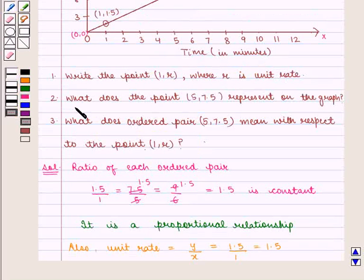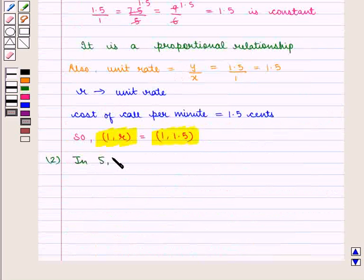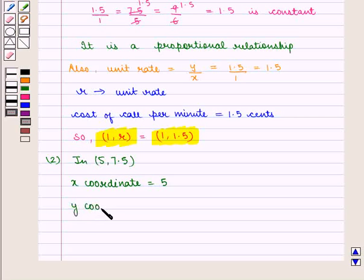Next, we shall find out what does the point (5, 7.5) represent on the graph. In the ordered pair (5, 7.5), the x-coordinate is 5 and the y-coordinate is 7.5.